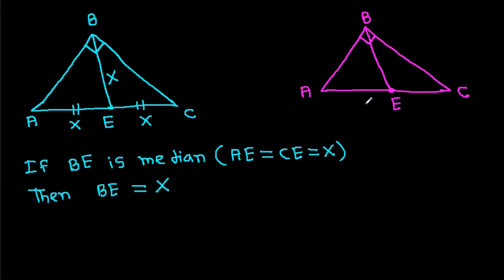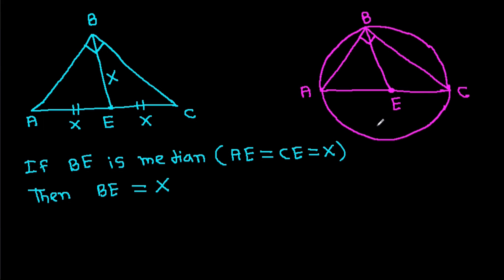That means in triangle ABC, this angle is 90 degrees and BE is the median. So from center E, if we draw a circle, it will pass through point A, point B, and point C. And AE, CE, and BE will each be the radius. So we can say that BE is equal to AC divided by 2.